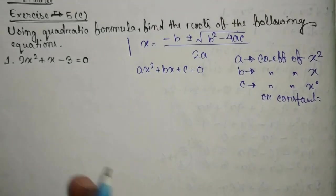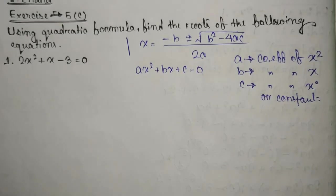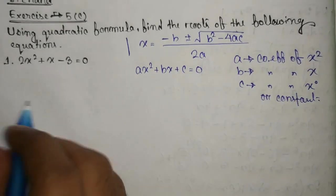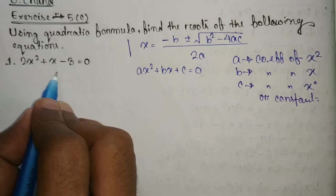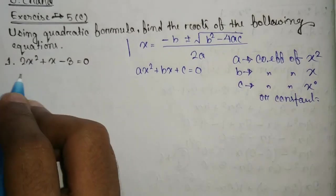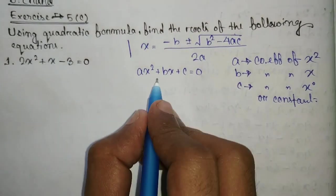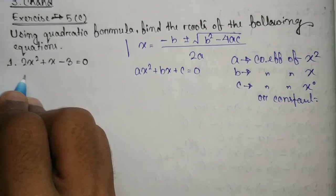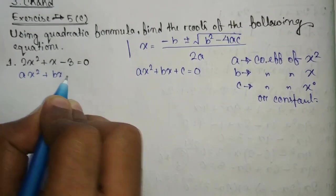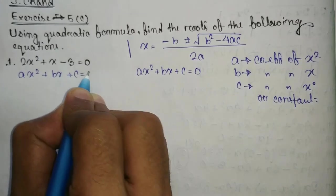So in this case we have 2x square plus x minus 3 equal to 0. So we have to compare this equation with the ideal quadratic equation. That is ax square plus bx plus c equal to 0.